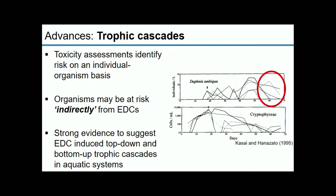In one example, the addition of a herbicide, Cymitrin, caused a decline in one algal species; subsequently Daphnia populations crashed and were wiped out in the experiment. So organisms might be indirectly at risk from endocrine-disrupting chemicals — exposure of other organisms they're linked to within food webs may cause some form of risk. There is strong evidence for both top-down and bottom-up trophic cascades, including a case where fathead minnow populations declined by 99%, affecting multiple trophic levels.